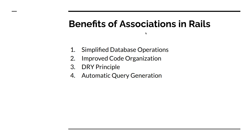There are many more benefits, but the last one highlighted here is automatic query generation. Active record associations generate appropriate SQL queries behind the scenes. For example, when you define a one-to-many or many-to-many association and query data across that association, Rails supports eager loading and behind the scenes runs inner join and left outer join queries for you. This simplifies retrieving associated records and avoids the need to manually write complex join queries.